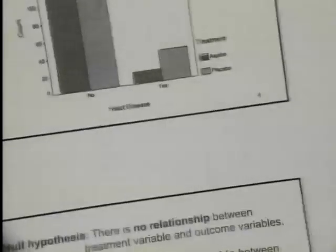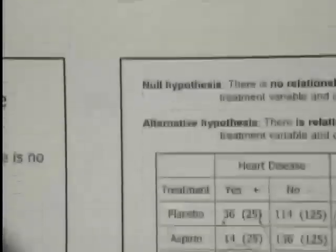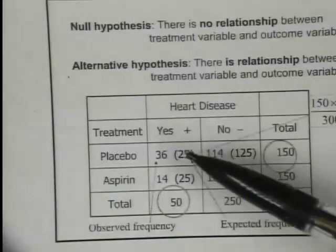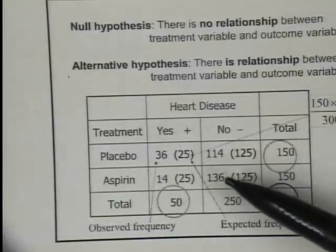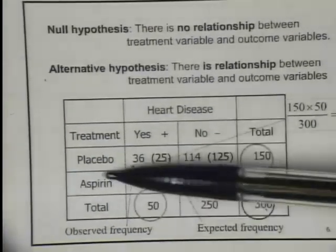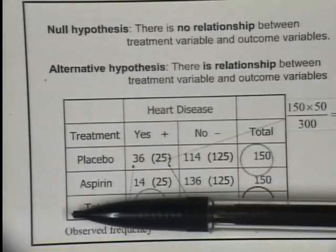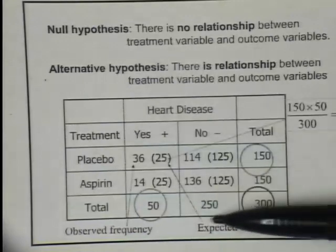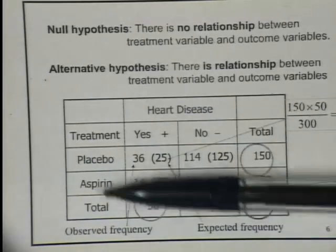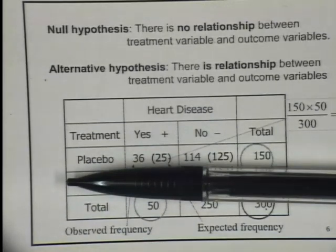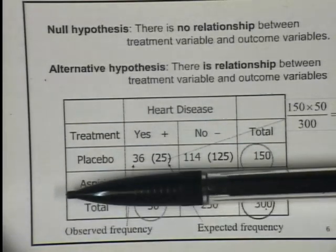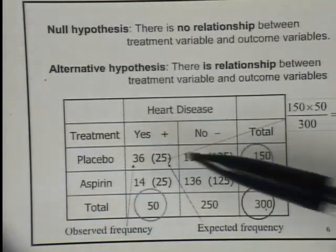If you look at this slide, the original data includes expected frequencies in parentheses. The observed counts are 36, 14, 114, and 136. If the null hypothesis is true — meaning the outcome distribution of placebo and aspirin should be the same — we look at the overall proportion: 50 and 250, which is a 1-to-5 ratio. So if there's no correlation, we expect the outcome distribution for each group to also be 1 to 5. For 150 people, that's 25 to 125. These are the expected cell counts under the null hypothesis.